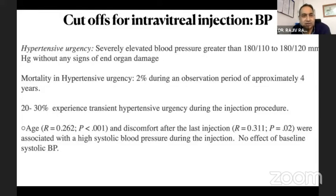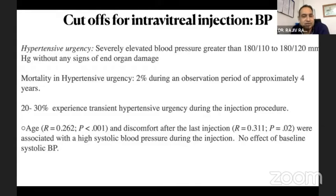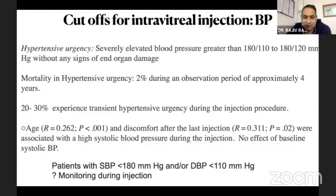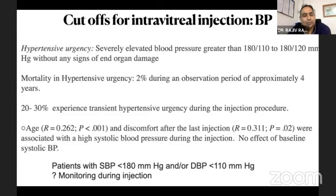Coming to the safety part of blood pressure — what is the safe level of BP to give an intravitreal injection? One must understand the term hypertensive urgency, where there is a severely elevated BP more than 180/110 to 180/120 without any sign of end organ damage. It's important to recognize this because it carries a 2% risk of mortality over the next four years. Surprisingly, 20–30% of people experience hypertensive urgency during injection, with risk factors being discomfort from the last injection and high systolic BP. It is important to maintain BP below this threshold. A systolic of less than 180 and diastolic less than 110 should be safe, and monitoring BP during injection would be a good idea if possible.